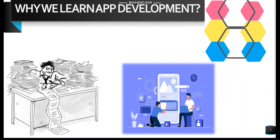Why do we learn application development? An app makes work easier and more effective than a human. For example, consider the workload comparison of sending messages from one place to another. For an app, it is just a few clicks and your message is sent to multiple people at the same time. Whereas, it is very difficult to send messages manually to different people at the same time.